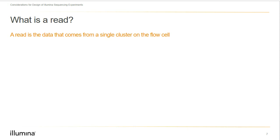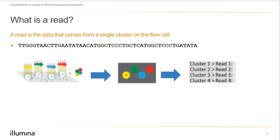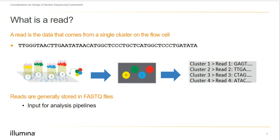Before we discuss types of reads and read length, let's define a read. A read is the data that comes from a single cluster on the flow cell — the actual genomic sequence found for a particular sample. This read is 50 bases long, meaning it would take 50 cycles from the sequencer to produce this piece of information. As a cluster lights up, the sequencer determines what base is present at a given cycle. During FASTQ generation, all cycle information is put together to form reads, which are stored in FASTQ files. Demultiplexing refers to assigning reads to the correct samples based on index or index combinations.